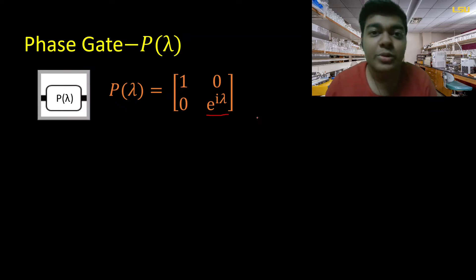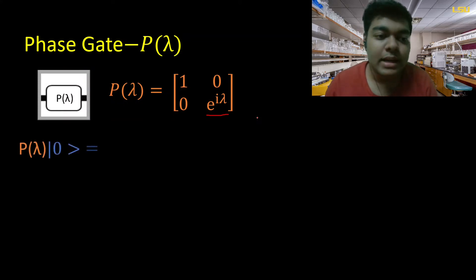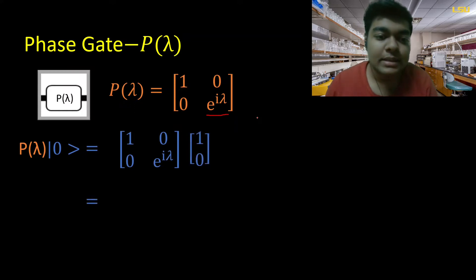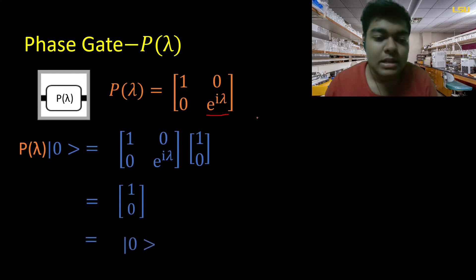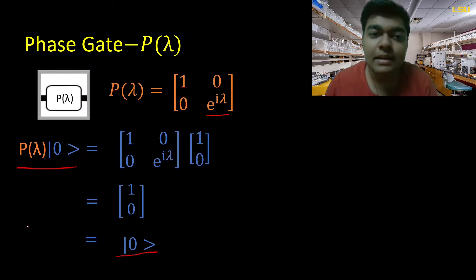Let's do what we do every time — we'll apply this gate to |0⟩ and |1⟩ and analyze the results. First, applying to |0⟩: substituting the matrix and the vector and doing the matrix multiplication, what we get is |0⟩. So when you apply this phase gate to |0⟩, you get |0⟩ — the phase gate has no effect on |0⟩.